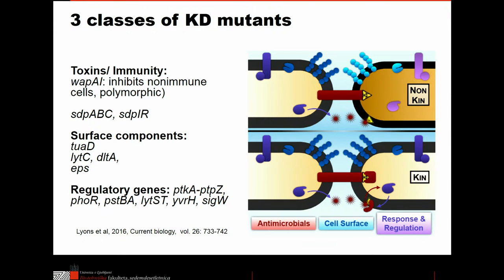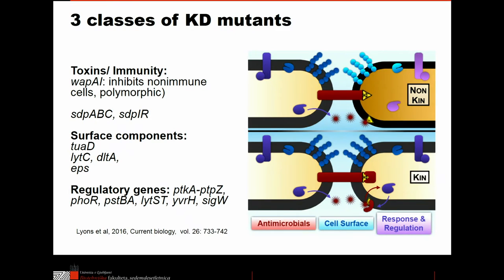From these experiments, the loci responsible for boundary formation could be grouped into three functional groups. First, toxin-immunity genes — for example in Bacillus, VapA is a contact-dependent toxin-immunity function that is also polymorphic between strains, along with other killing and toxin-immunity genes. Second, surface component genes involved in synthesis of teichoic acid or extracellular polysaccharides present on the surface. Third, regulatory genes, many of which regulate these functions.